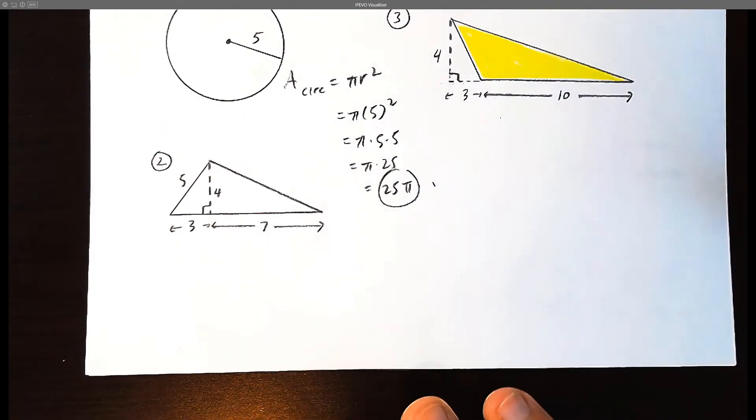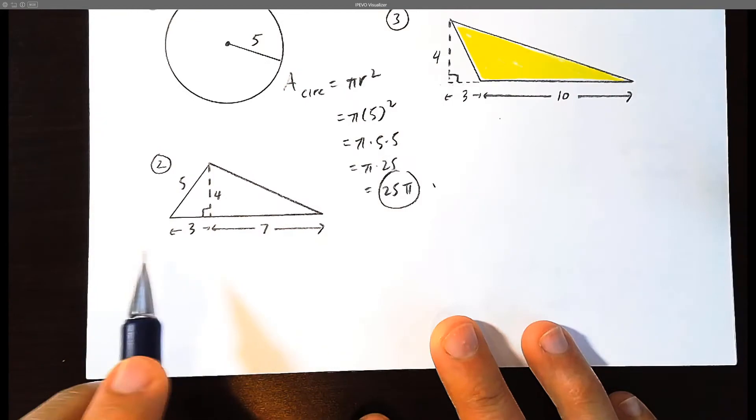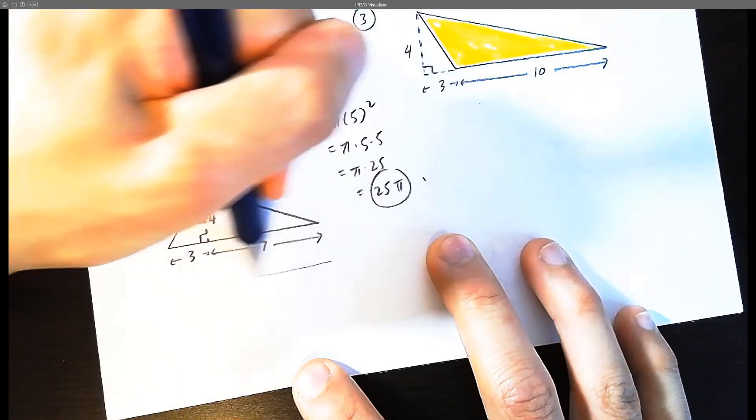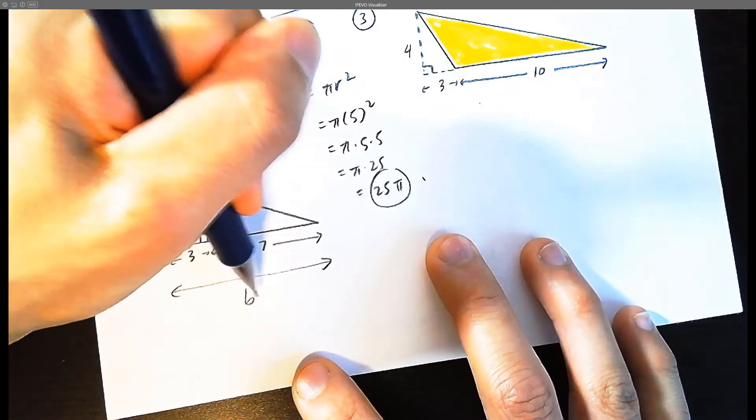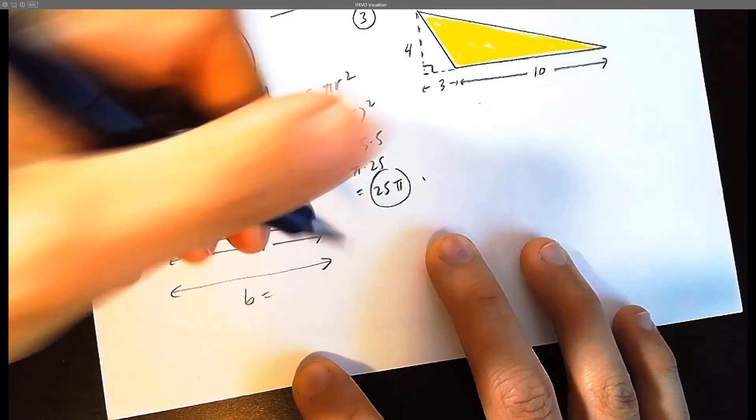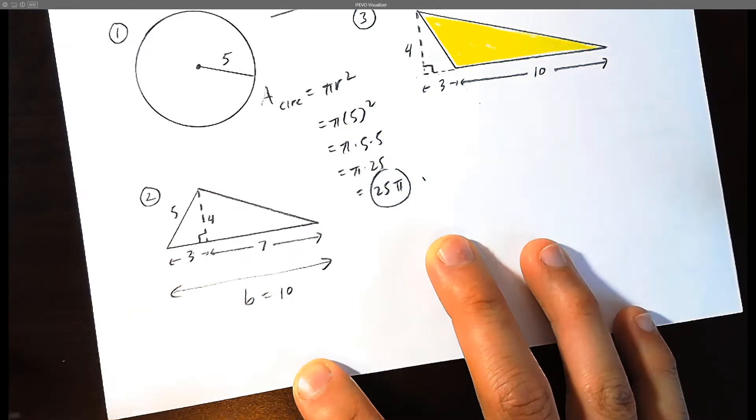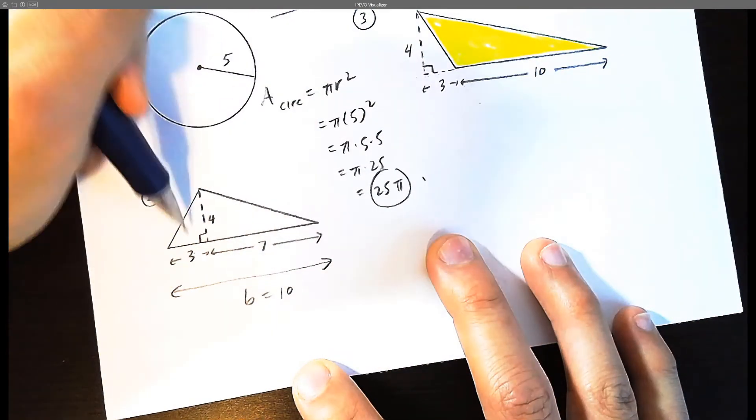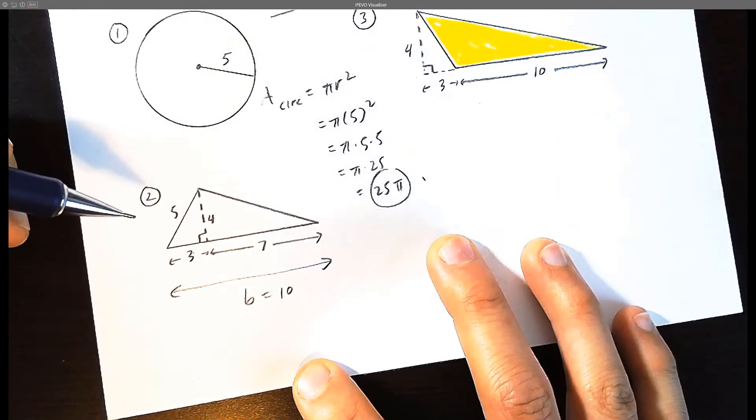Number 2, in this case we have a wide triangle. Now be careful, the base is actually equals to 3 plus 7, which is 10. So don't be confused by all the numbers. Base times height divided by 2 is the area of a triangle.